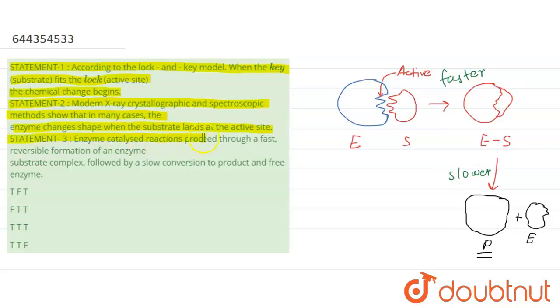Now the third statement, that is: enzyme catalyzed reactions proceed through a fast reversible formation of enzyme-substrate complex. Yes, the first step is faster and it is followed by a slow conversion to product and free enzyme. Yes, this is the right statement, so all the statements are right.